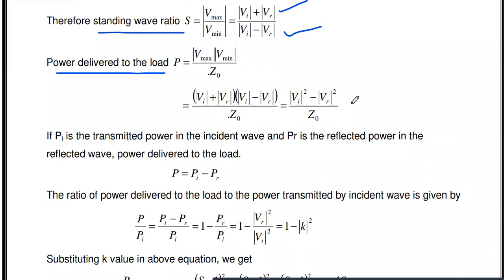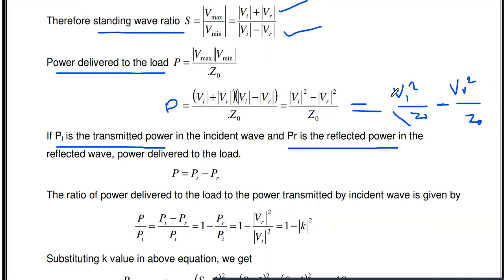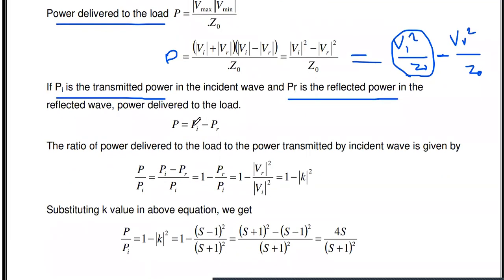V_I² / Z_0 is the incident power P_I, and V_R² / Z_0 is the reflected power P_R. So the total power delivered P = P_I − P_R. The subtraction of incident power and reflected power is the power delivered to the load.